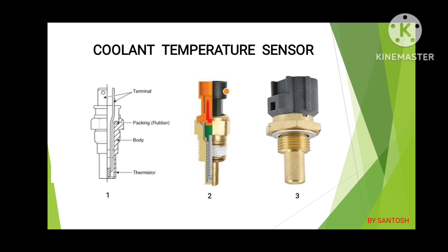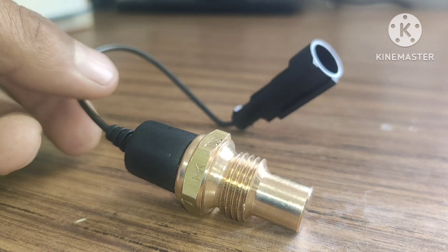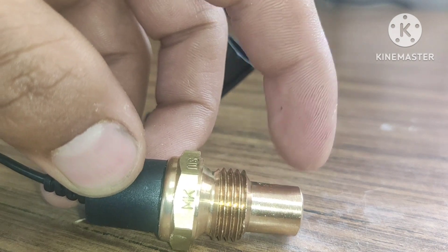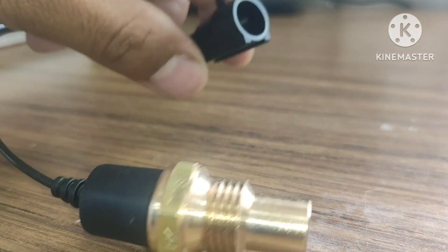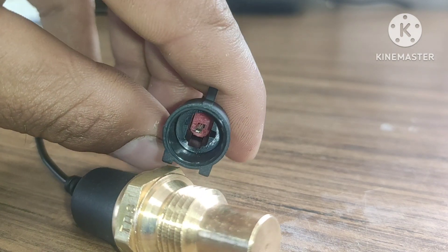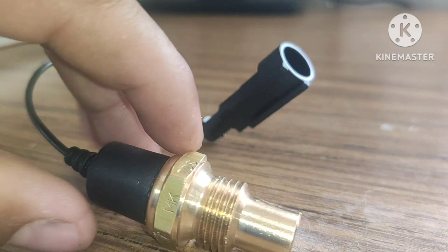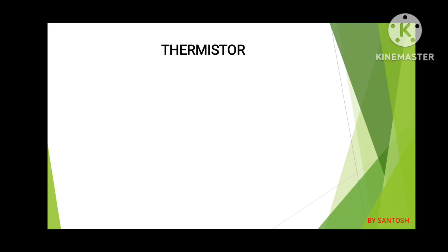This sensor is located on the top of the engine head, or you can check it on the engine cooling line system. Inside, a variable resistor is given, so it is called a thermistor. You can see a single wire is connected, and it takes earthing from the body through the thread of the engine. In automotive systems, we use the thermistor as a coolant temperature sensor.